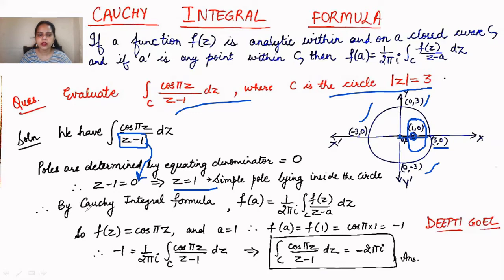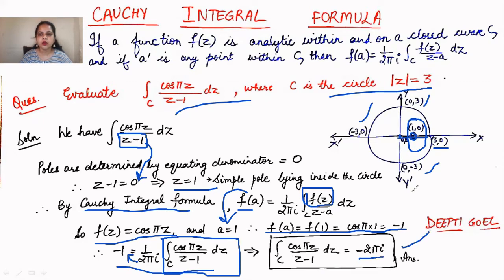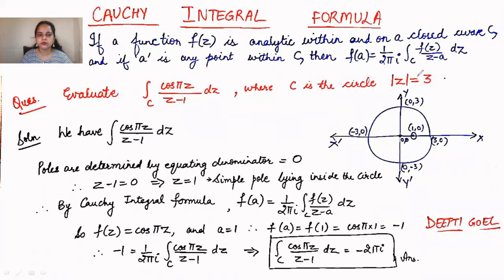Since the pole z = 1 lies inside the circle, we apply the Cauchy Integral Formula: f(a) = (1/2πi) ∮_C f(z)/(z − a) dz. Here f(z) = cos(πz) and a = 1. So f(1) = cos(π·1) = −1. Substituting: −1 = (1/2πi) ∮_C cos(πz)/(z − 1) dz. Rearranging, we get ∮_C cos(πz)/(z − 1) dz = −2πi. Without the Cauchy Integral Formula, this calculation would have been quite lengthy.